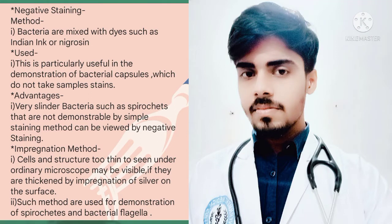In negative staining, the bacteria are mixed with a dye such as Indian ink or nigrosin. This method is particularly useful in the demonstration of the bacterial capsule, which does not take up simple staining. The advantage of negative staining is that very slender bacteria such as spirochetes, which are not demonstrable by simple staining, can be viewed by this method.